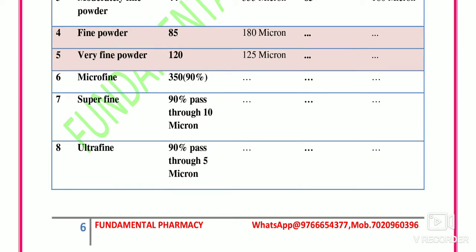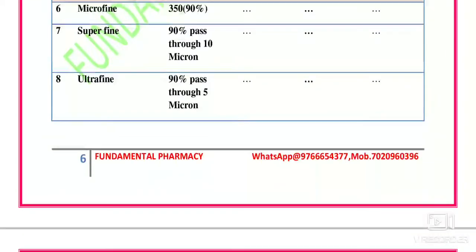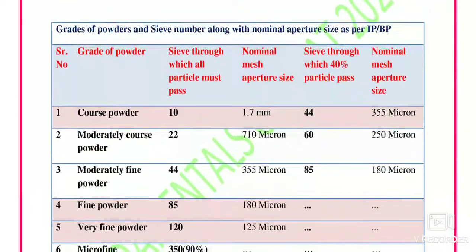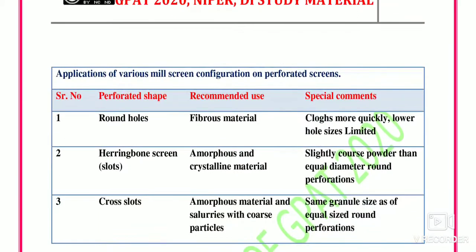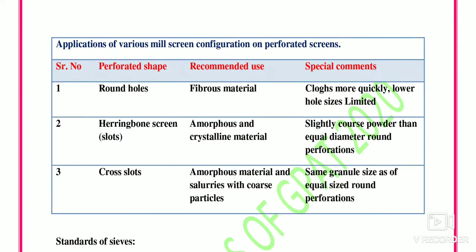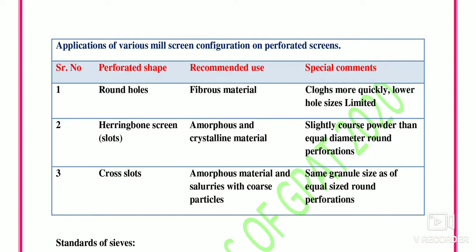If the powder is able to pass through a five micron size sieve, it is known as ultra fine powder. This table is important for GPAT. Next, we look at the different types of screens available and their respective uses. There are different types of perforated shapes available for sieves.